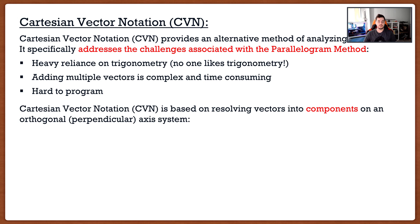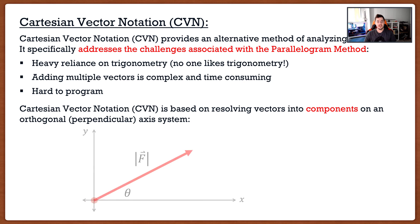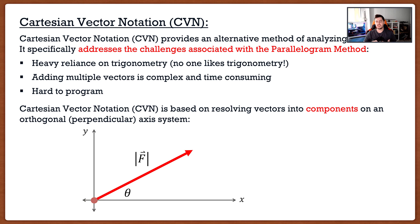Cartesian vector notation is based upon resolving vectors into components on an orthogonal axis system, where orthogonal basically means perpendicular. That sounds like a lot of word garbage but it's actually very nice because an orthogonal axis system is something you're already used to — it's a simple x and y coordinate system. The x-axis and y-axis are perpendicular to each other, forming a 90-degree angle.